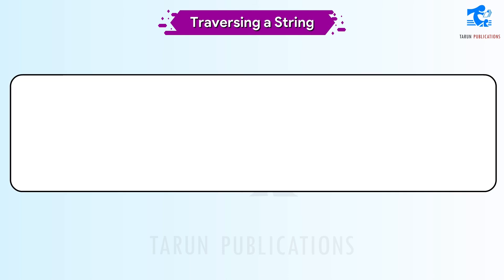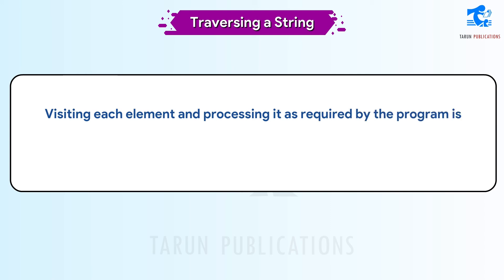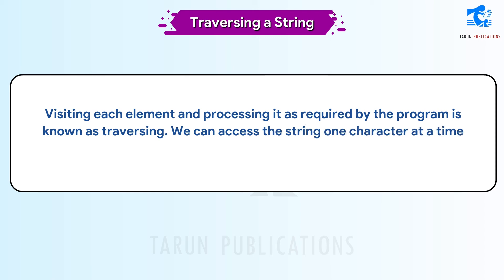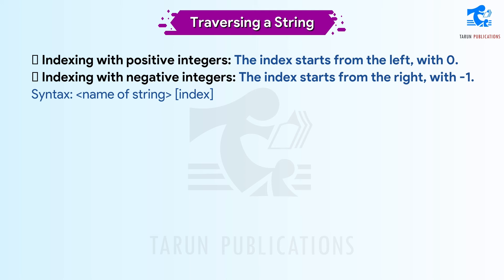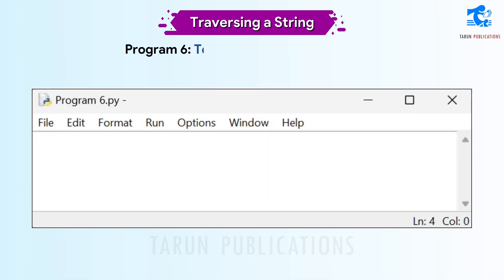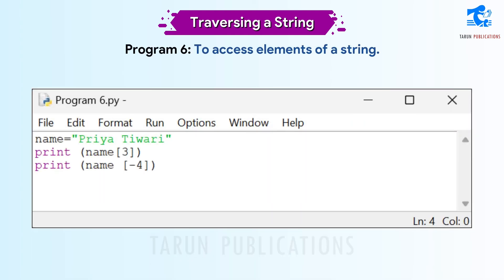Traversing a String. Visiting each element and processing it as required by the program is known as traversing. We can access the string one character at a time by using indexing. In Python we can traverse a string in two ways: indexing with positive integers, where the index starts from the left with zero; and indexing with negative integers, where the index starts from the right with minus one. Syntax: name_of_string[index]. Program 6: to access elements of a string — code shown.